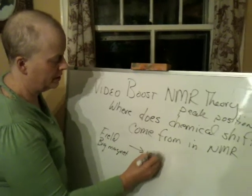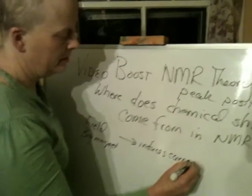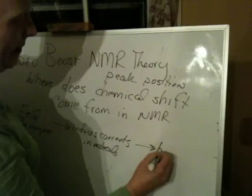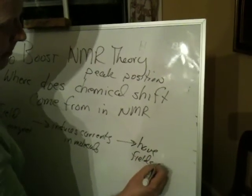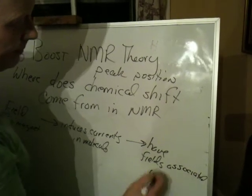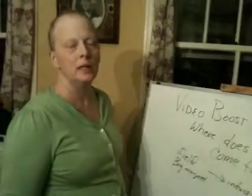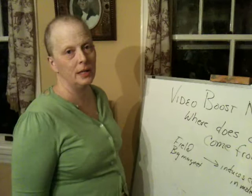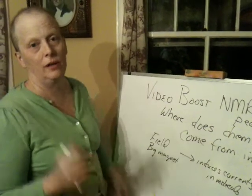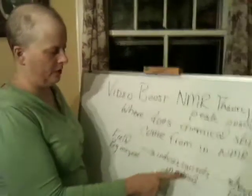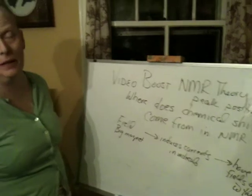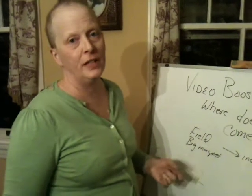The big magnet induces currents in the molecule. Induced currents have fields associated with them. Anytime you have an electric current, there is a magnetic field associated with it — that is what we know as an electromagnet. The field makes the electrons move around in the molecule; the field acts as a force on the electrons and pushes them in a prescribed way. When the electrons start moving around, that creates little micro-currents in the molecule, and those micro-currents have magnetic fields associated with them. They're very small magnetic fields, but those fields change the net field for given hydrogens in the structure.